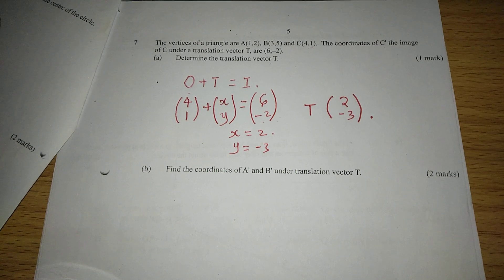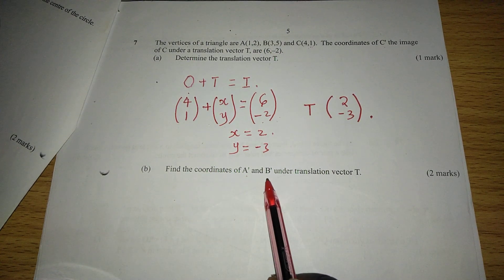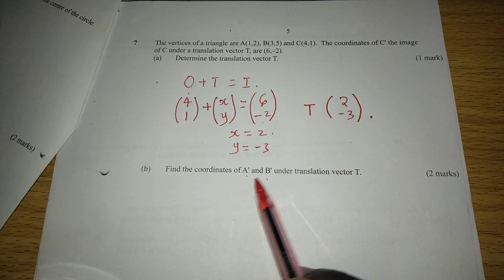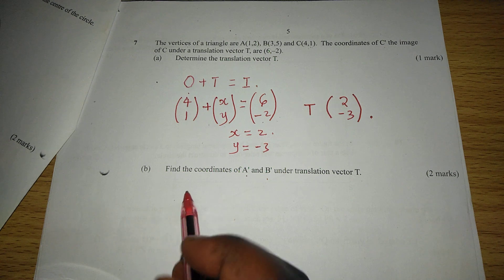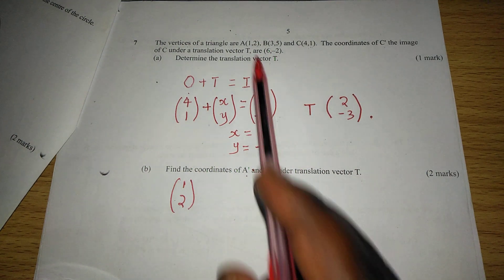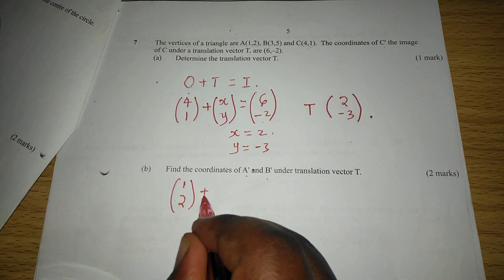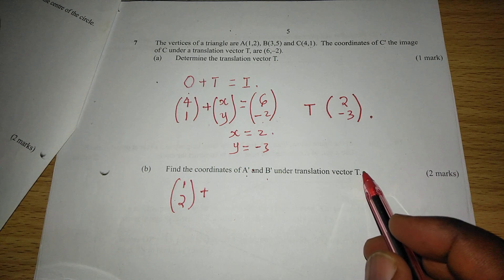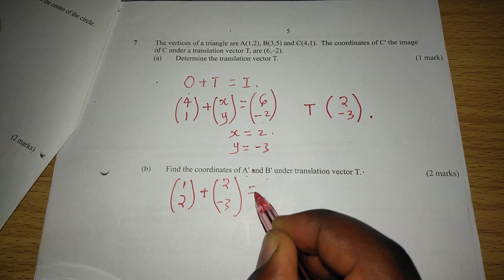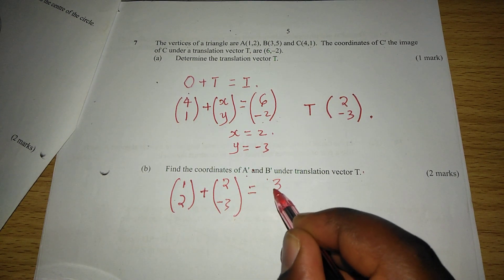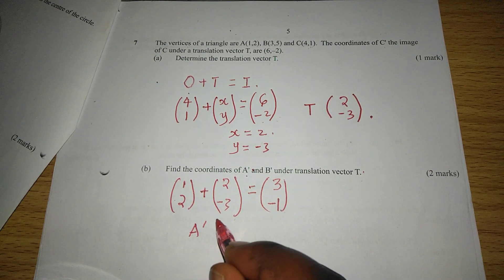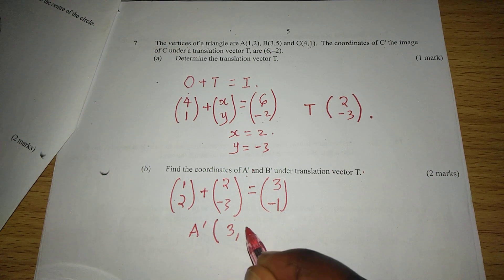The other part of the question is telling us to find the coordinates of A' and B' under translation vector T. So the same vector T is going to translate the other coordinates of the triangle, such that A, which is (1,2), written in column form now as (1,2), we add the translation vector which has already been calculated as (2,-3). This should give us the image of A, and that will be (3,-1), such that A' has coordinates (3,-1).